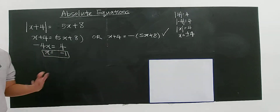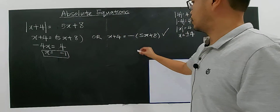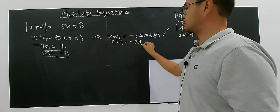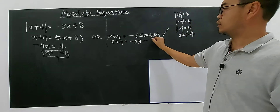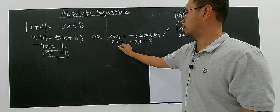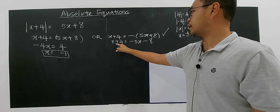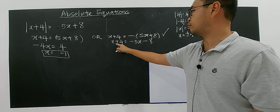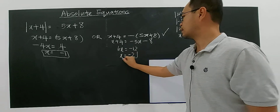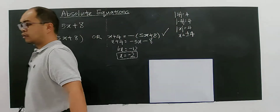We need a further check to confirm that this will be your solution. For the second case, you have x plus 4 equals to negative 5x minus 8. Then you will have 6x equals negative 12, so x equals to negative 2. So for now you have 2 solutions.